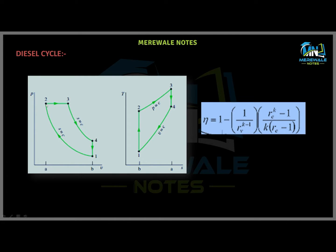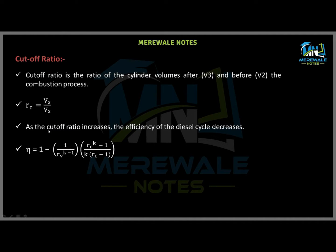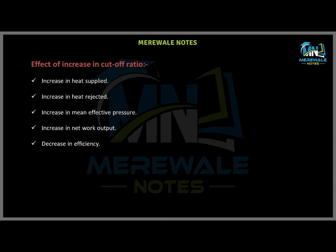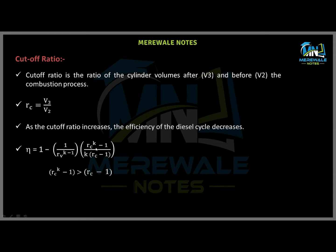We can easily see in the diagram: the cutoff ratio is V3 over V2, and the compression ratio is V1 over V2. The main effect of the cutoff ratio is that as we increase the cutoff ratio, the efficiency of the diesel cycle decreases. Looking at the efficiency expression, we can see that the term (Rc^k − 1) / (Rc − 1) is greater than 1, because Rc has a power k which is always greater than 1.